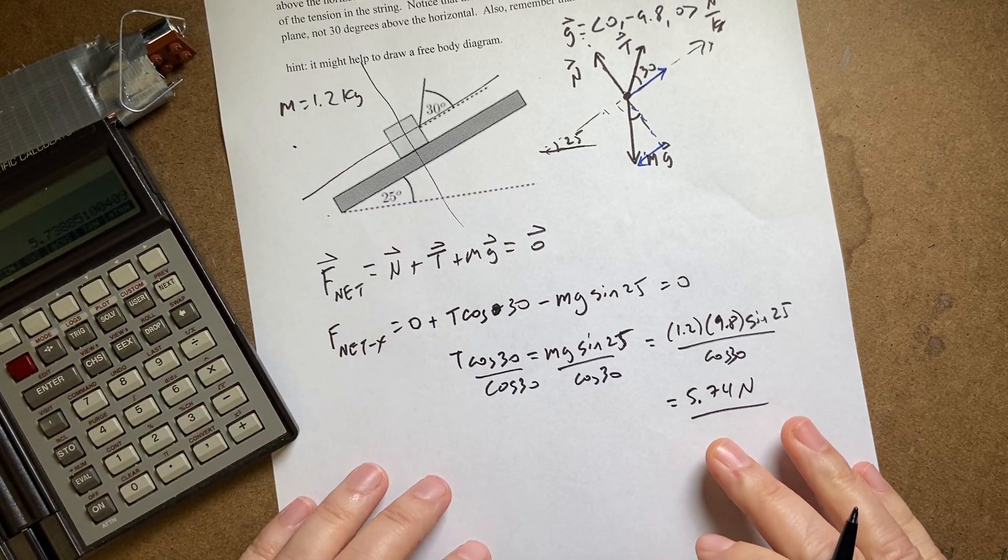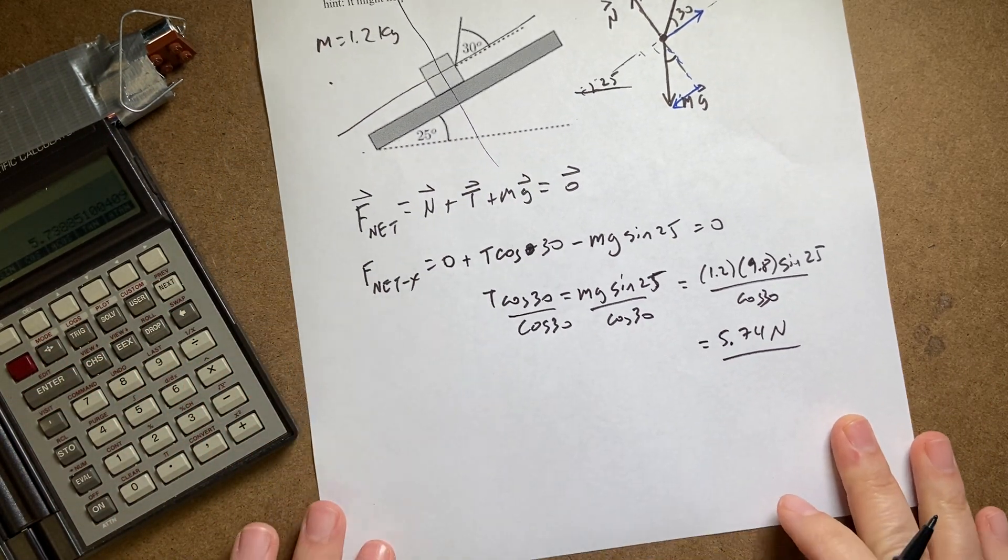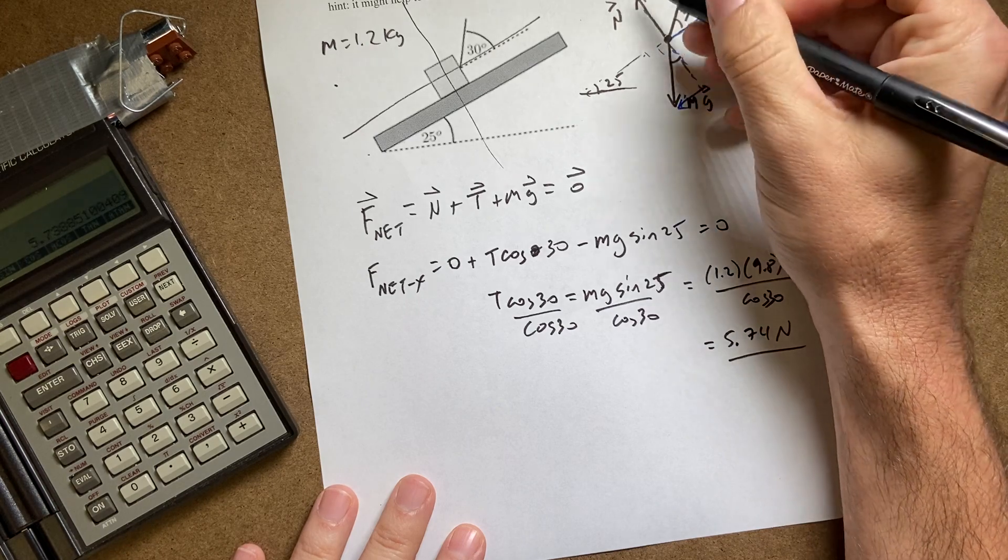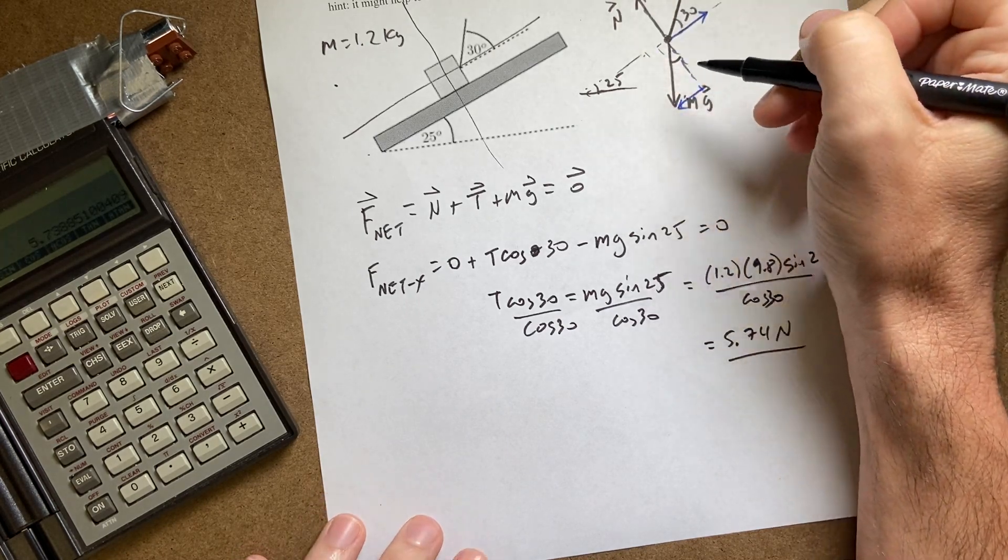And I get 5.74 newtons. That's the tension right there. If you wanted to, you could also find this normal force right here. I'm going to write down the equation. I'm not going to solve for it though.